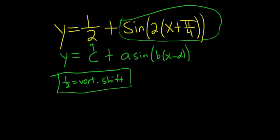The number here is going to be a. We know from a formula that the amplitude equals the absolute value of a. So in this case, it's just the absolute value of 1, so the amplitude equals 1.